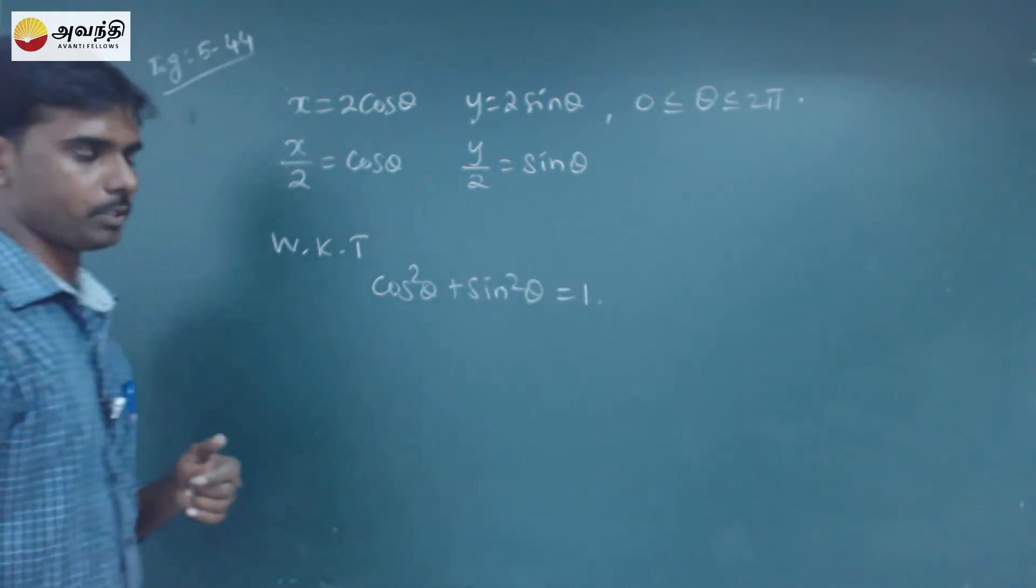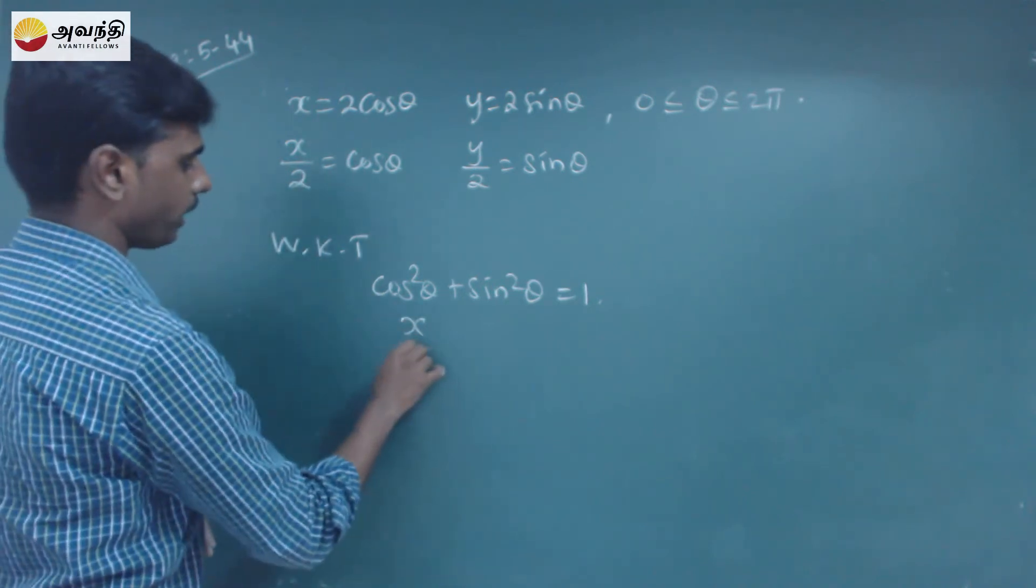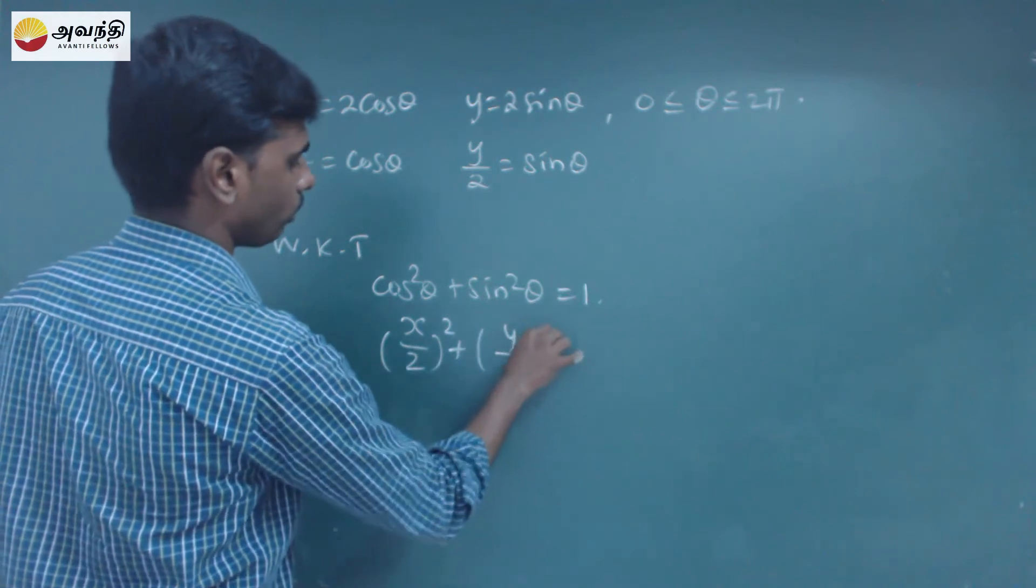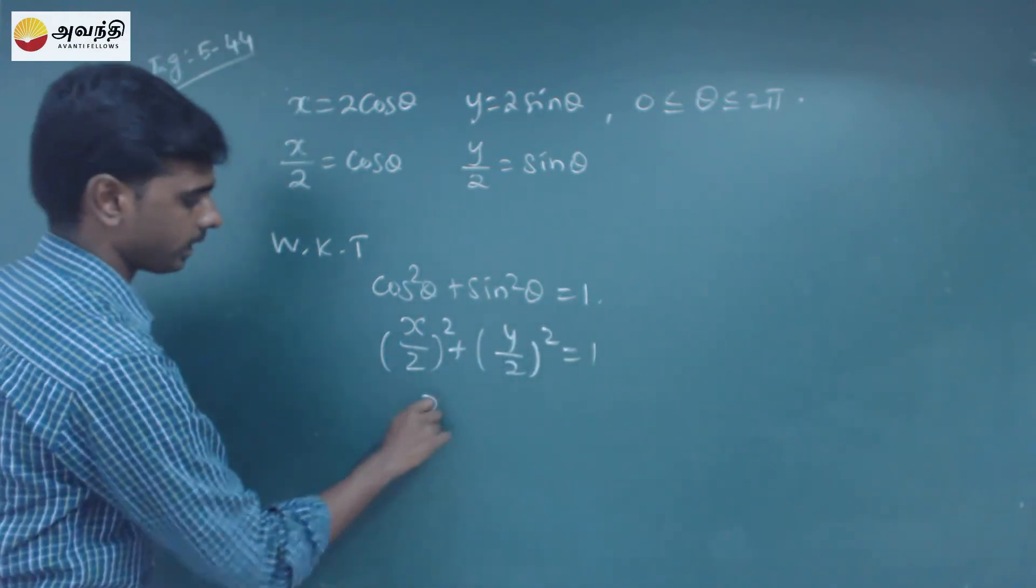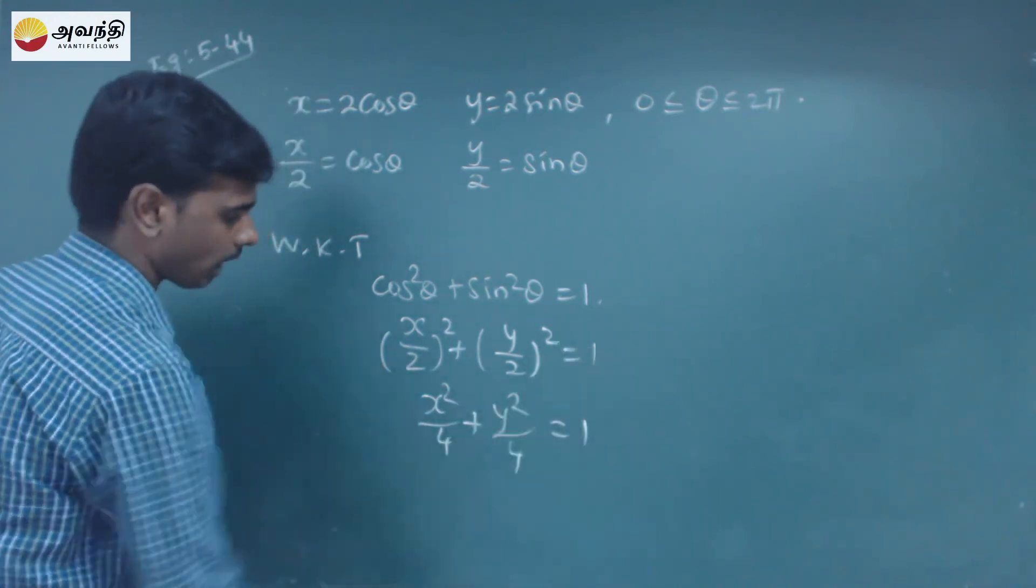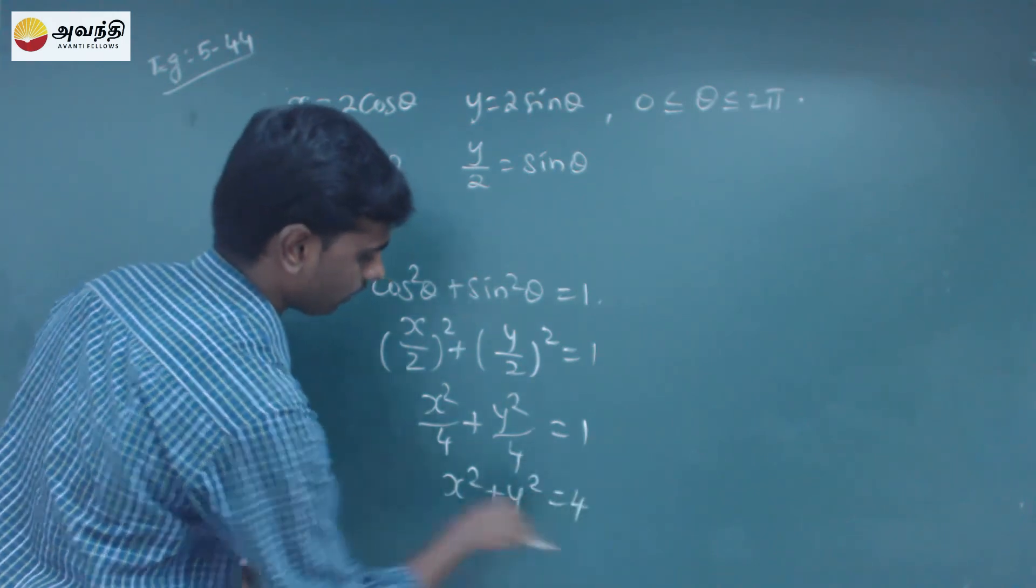So we know that we have to substitute here. Cos theta is x by 2, then x by 2 whole square plus y by 2 whole square is equal to 1. That is, x square by 4 plus y square by 4 is equal to 1, so x square plus y square is equal to 4.